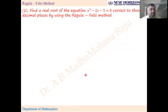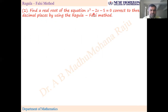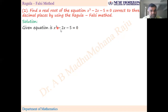Now we will see the first problem: find a real root of the equation x³ − 2x − 5 = 0, correct to three decimal places, using the Regula-Falsi method. We have to find out the root of this equation. The given equation is x³ − 2x − 5 = 0. Take the left-hand side function as f(x), so f(x) = x³ − 2x − 5.